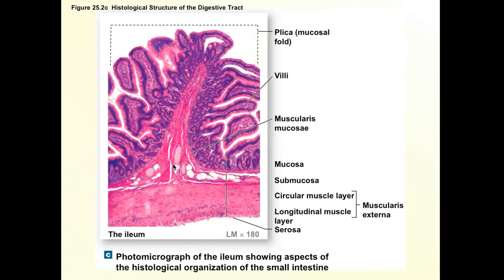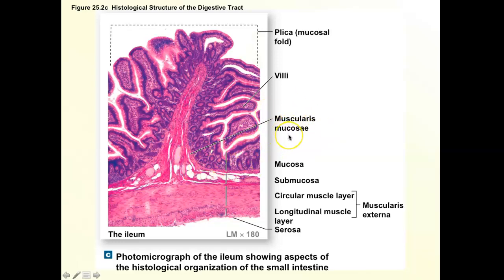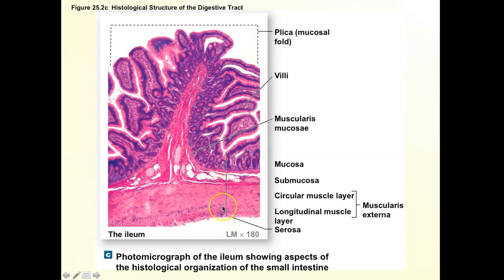There's a big transition between the mucosa — which is darker — and the submucosa, which is predominantly connective tissue. The cells are there but they're far apart, there are a lot of fibers, and those don't stain very darkly. So there's a big transition from dark to pink. That pink area is the submucosa. There's also that small muscle layer called the muscularis mucosa, which is technically part of the mucosa.